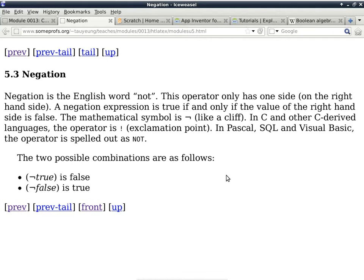This is an easy one: negation simply means the word NOT. In mathematics, it looks like a little cliff. In C and C++ and all the other C-derived languages, it is represented by the exclamation point. In Pascal, SQL, Visual Basic, and most other languages, it is simply spelled out as N-O-T.